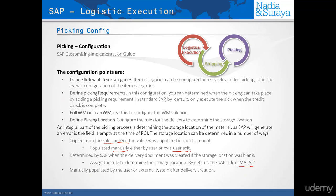If the sales order is blank, we will look at the rule Mala, which is a configuration rule that we assign. So what we say is: when you create the sales order, go through the rule Mala to determine where the storage location is, and we will look in detail at how this is done. You can also populate the storage location via user exit in the delivery.